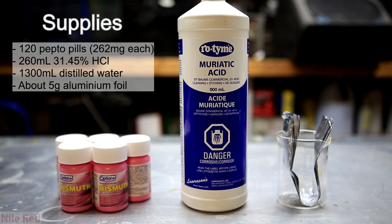For the extraction of bismuth from Pepto-Bismol pills, all that's needed are the pills themselves, muriatic acid, also known as hydrochloric acid, and aluminum foil.